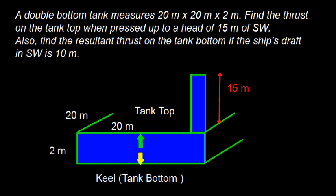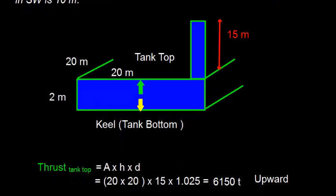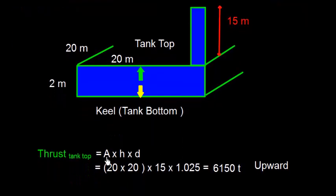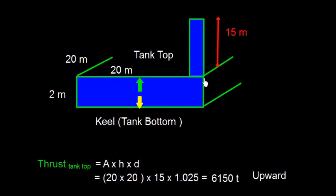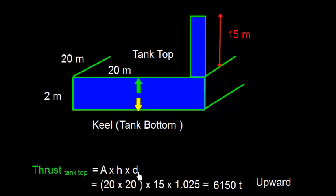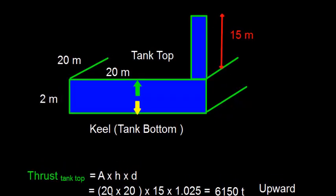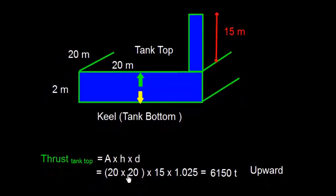So let us find out what is going to be my thrust on tank top. Thrust on tank top is going to be area into H, which is depth of the tank top from water level, that is 15 meter, into density. So area is 20 into 20, and the depth is 15, and density is 1.025.